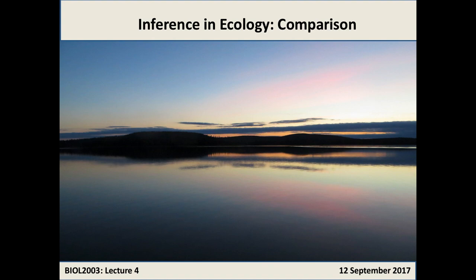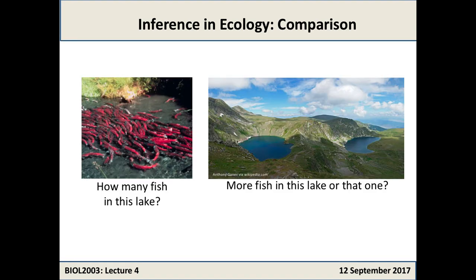Today we're going to move on from what I talked about on Monday about estimation and how, as ecologists, we can evaluate the precision of the sample that we take. In this lecture, we're going to move on — if we want to compare between two things, how do we do that? We've talked about how to make a measurement: how many fish are in a lake, how many gill rakers does a stickleback have. But what if we want to make an actual comparison and have some certainty, some confidence in our estimate of that comparison? How do we know there are more fish in this lake than that lake?